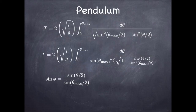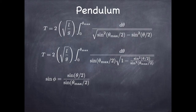The variable φ goes from the angle whose sine is 0 to the angle whose sine is 1, because when θ = θ_max, sin(θ_max/2)/sin(θ_max/2) = 1, so sinφ goes from 0 to 1, meaning φ goes from 0 to π/2. Instead of integrating over a range that depends on θ_max, we always integrate from 0 to π/2, which is useful.